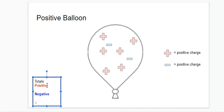So, if I look at my totals, I've got 6 positive charges still. And if I add that to 2 negative charges, 6 positive plus 2 negative is going to be overall 4 positive. So, this balloon is going to be overall positive balloon.